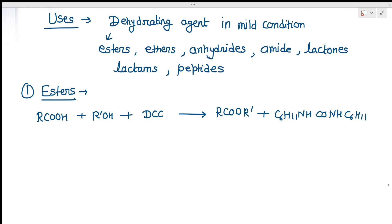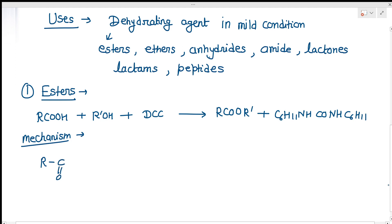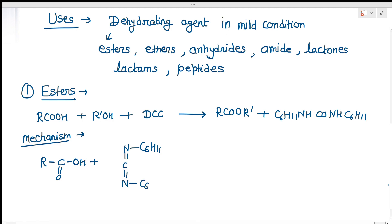Now let's see the mechanism for this esterification reaction. For the CSIR-NET exam you don't need the mechanism — you just need to know where a reagent is being used. But if you are studying for BSc or other exams, this mechanism will be useful. The acid R-COOH plus DCC (C6H11-N=C=N-C6H11) are present simultaneously, and an equilibrium is established.